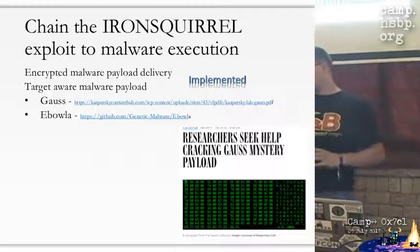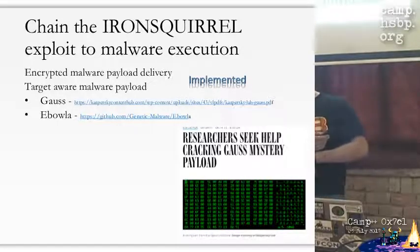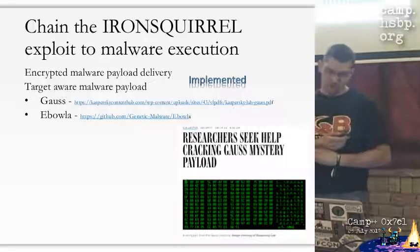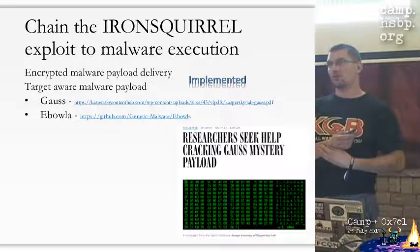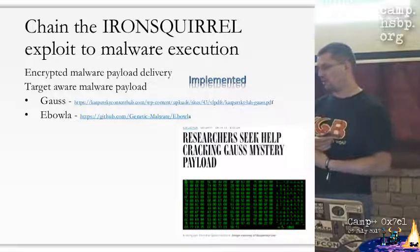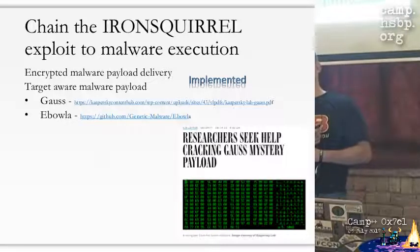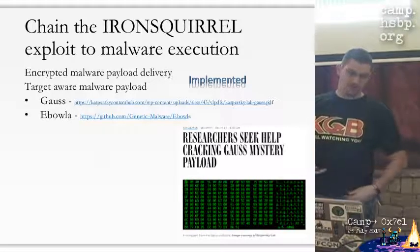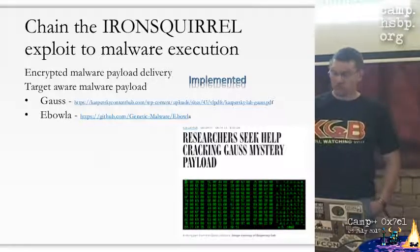Now you can deliver your exploit code safely and run your shellcode in the victim's browser - what is the next logical step? Have you heard about the Gauss malware? What was great about it is that some payloads were encrypted in a way that they would only run in specific environments where the path variable was set to a specific string. Because no reverse engineer had access to that path string, no one knows what's inside that payload. This whole idea was implemented in the open-source Ebola project - I highly recommend you check it out.